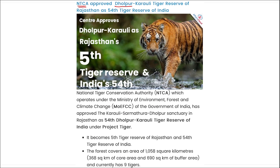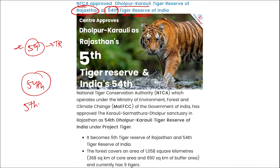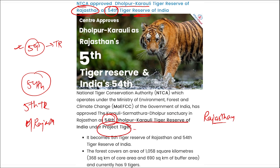NTCA has approved the Dholpur Karoli Tiger Reserve of Rajasthan to become the 54th Tiger Reserve of India. The total number of Tiger Reserves in India is now 54 as of 2023. Dholpur Karoli is also the 5th Tiger Reserve of Rajasthan. It is located in Rajasthan and falls under Project Tiger, which was launched in 1972-73.